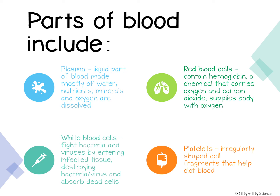White blood cells are also produced in bone marrow and they fight disease in your body. As soon as they recognize bacteria, they alert the body that there's a foreign substance, and all the other white blood cells start producing chemicals to fight the invader by surrounding and killing the organism. For every 1,000 red blood cells there's only about one white blood cell, and white blood cells are actually much larger than red blood cells. While red blood cells live about 120 days, most white blood cells can live for several months and some even live for years.